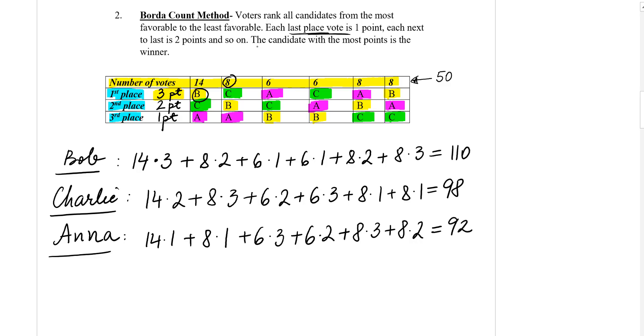So the candidate with most points is the winner. In our case, 110, 98, 92. The winner is Bob. I hope this helps.